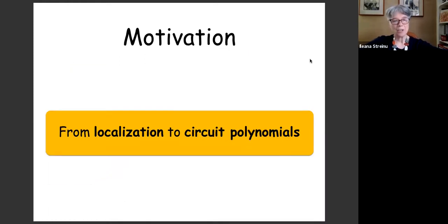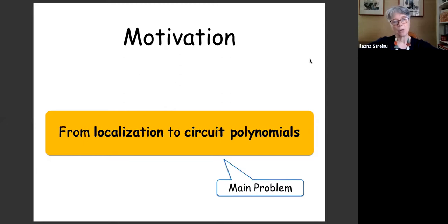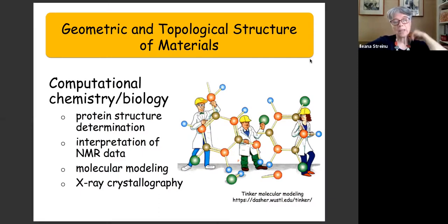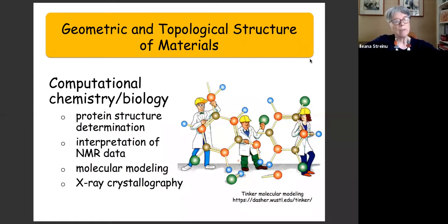Let me start with the motivation. I use the name of a problem called localization as motivation, but the talk will not be about that. The talk will be about an object called circuit polynomials. This is also related to a talk I was giving in the morning. In computational chemistry or biology, there are many things that have to do with graphs embedded in three dimensions.